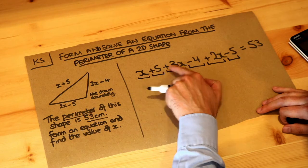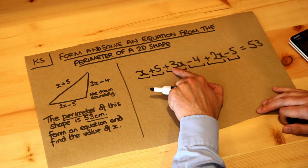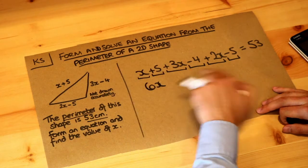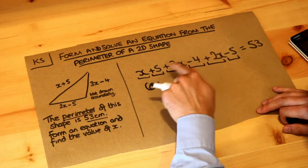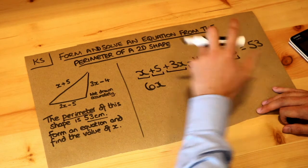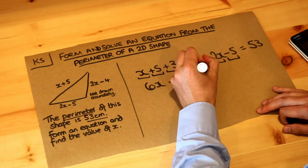So let's collect together the x terms first. We've got 1 lot of x plus 3 lots of x, that's 4 lots of x, plus 2 lots of x, that's 6 lots of x. And then we've got the constant terms, the terms without an x in them. 5 minus 4 is 1, 1 minus 5 is minus 4, and that is all equal to 53.